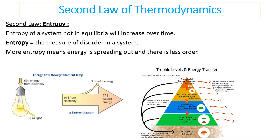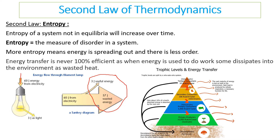For example, a light bulb: the electrical energy in has lower entropy, but out comes heat and light, which has higher entropy. There is more disorder and energy is being lost. Because of this, energy transfer is never 100% efficient — some energy inevitably dissipates, normally as wasted heat energy.